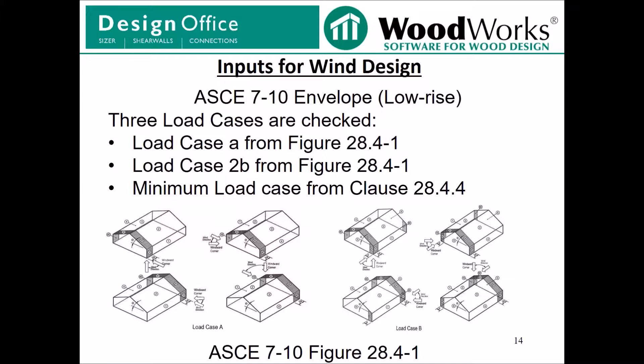For the envelope low rise method, Shearwalls completes checks for three cases. Load case A and load case B from figure 28.4-1 are both checked. Generally, in case A, loads are applied perpendicular to the ridge, and in case B, loads are applied parallel to the ridge. Shearwalls also generates loads based on the minimum load case for the envelope low rise method, with requirements from clause 28.4.4.